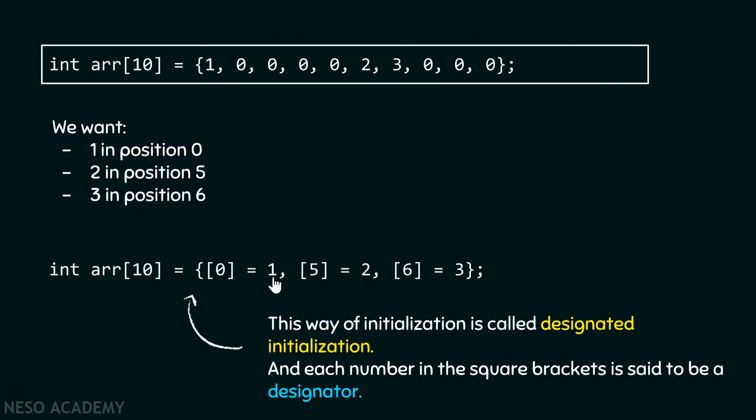As I want one in position zero, therefore I have to write something like this: square brackets, the index—this is called designator—and equal to sign, and then the element that you want to store in that particular index. At fifth position, I want to place value two, and at sixth position, I want to place value three.